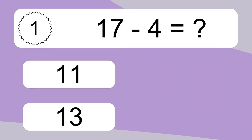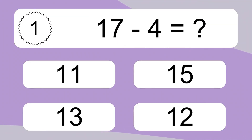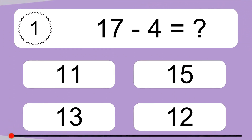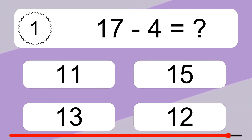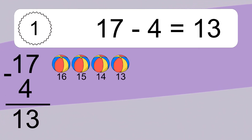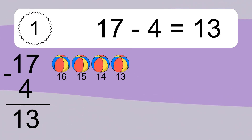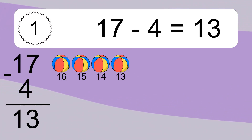17 minus 4 equals what? 17 minus 4 equals 13. Let's count it: 16, 15, 14, 13.